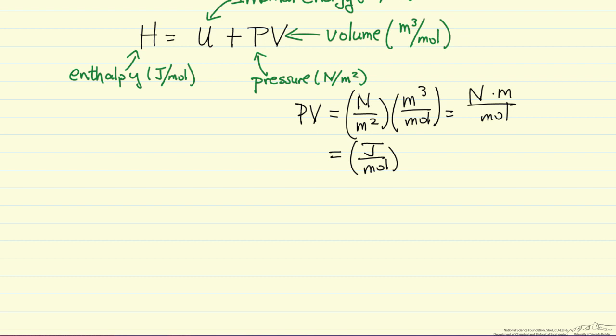An important property of enthalpy is that it is a state function. It's a sum of state functions: internal energy, pressure, and volume. State function means if we're going from point A to point B, it doesn't matter which pathway we pick. We can calculate ΔH if we know the enthalpy at the final point and the initial point.